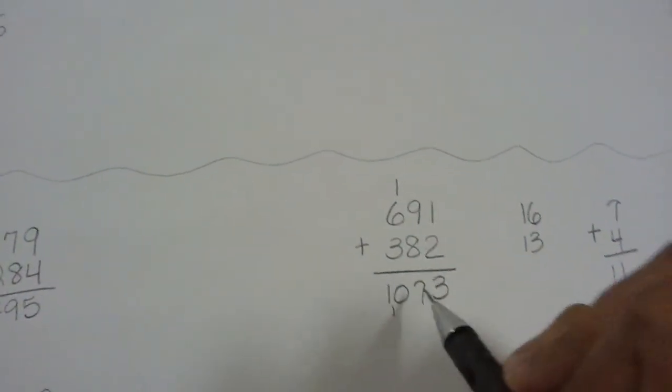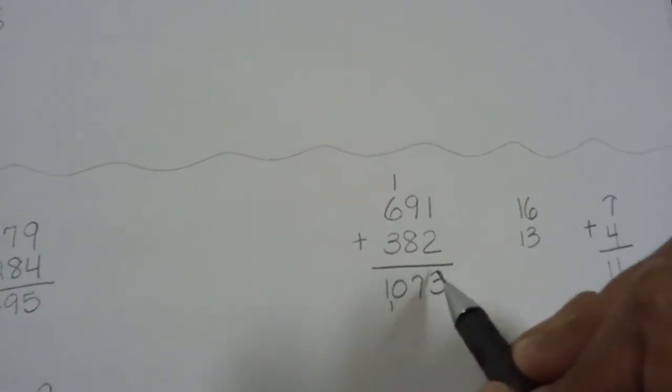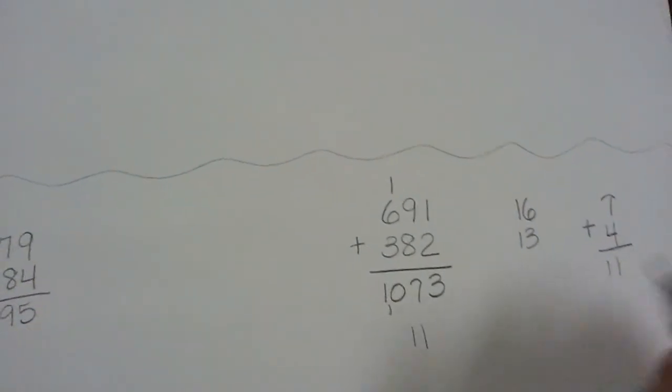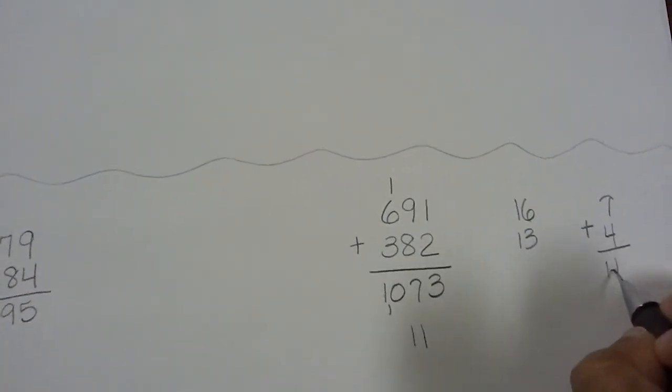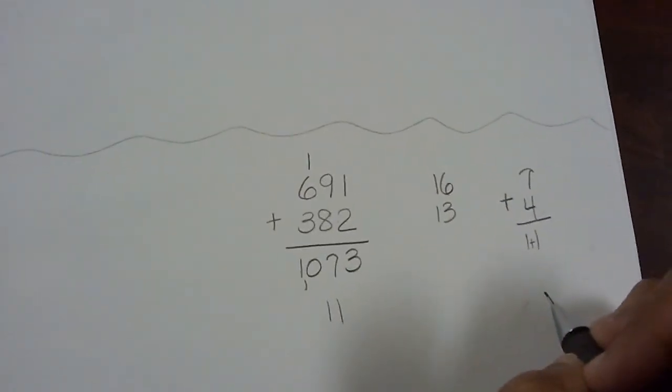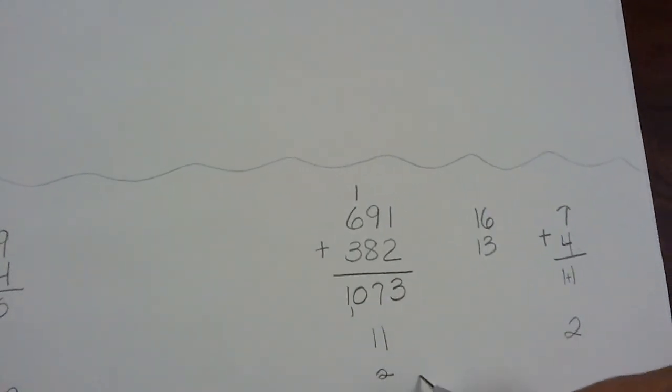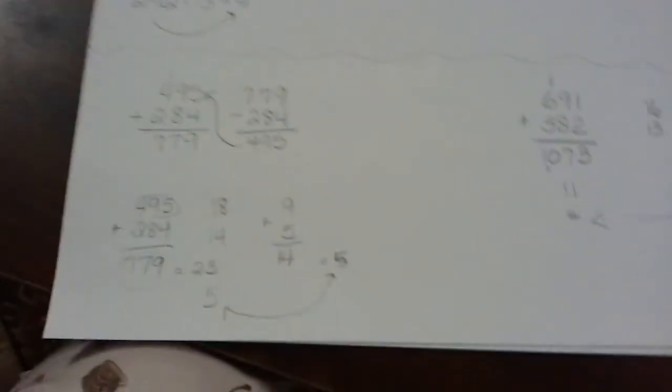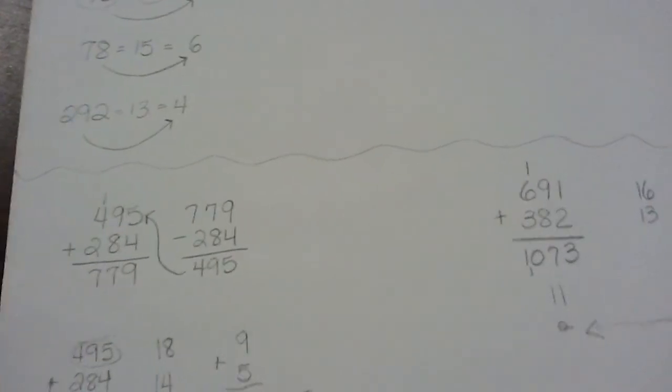Now let's add these together. 7 plus 1 is 8. Plus 1 plus 3 is 11. Now, I have to make sure I find the digital root of that. 11 is 2. Digital root of this is 2. I know I did this correctly. And that's how you use digital root to check addition.